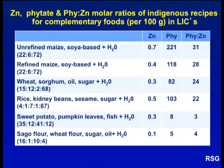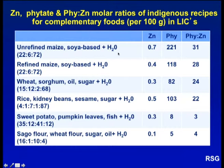We used these data to calculate the zinc, phytate and phytate zinc molar ratios of indigenous recipes for complementary foods. We can see the zinc, phytate and phytate zinc molar ratio of the national complementary food consumed in Malawi, based on unrefined maize and soya bean, noting the very high phytate zinc molar ratio. Compare this with the much lower phytate zinc molar ratio of sweet potato and pumpkin leaf complementary food, and another complementary food based on sago flour, wheat flour and sugar consumed in Papua New Guinea — though note the very low zinc content of this sago flour complementary food.